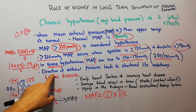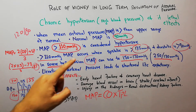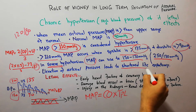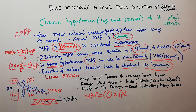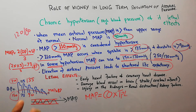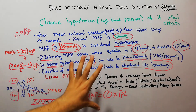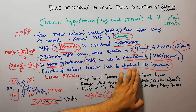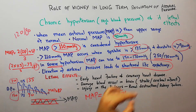Elevation of mean arterial pressure leads to a shortened life expectancy. More than a 50 percent increase in MAP means a person cannot live more than a few years. This raises the question: how exactly does elevated MAP shorten life expectancy?